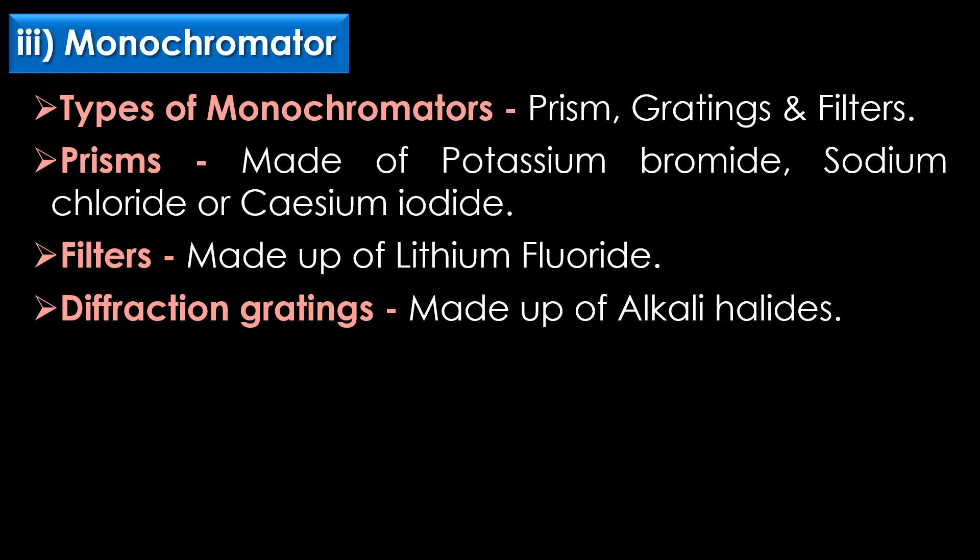The third part of IR spectroscopy is the monochromator. Various types of monochromators are prisms, gratings, and filters. Prisms are made of potassium bromide, sodium chloride, or cesium iodide. Filters are made up of lithium fluoride. Diffraction gratings are made up of alkali halides.